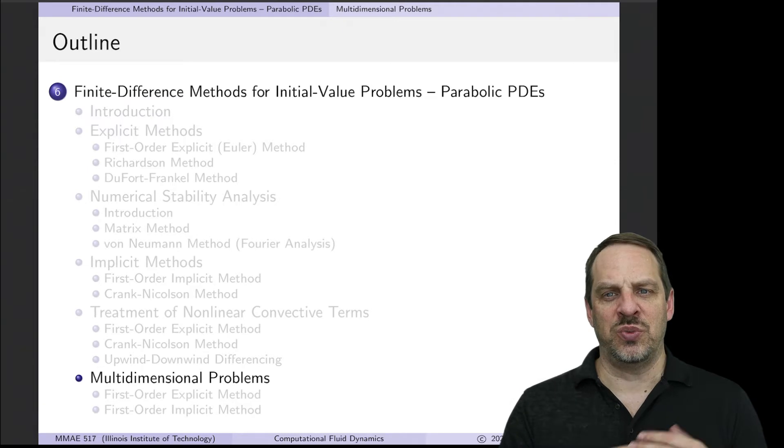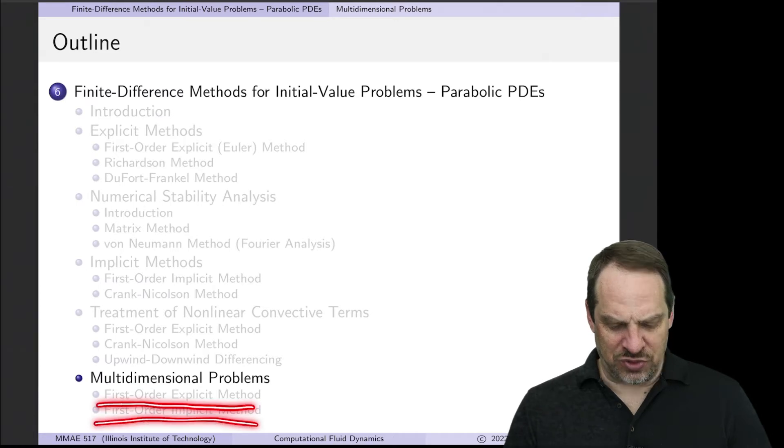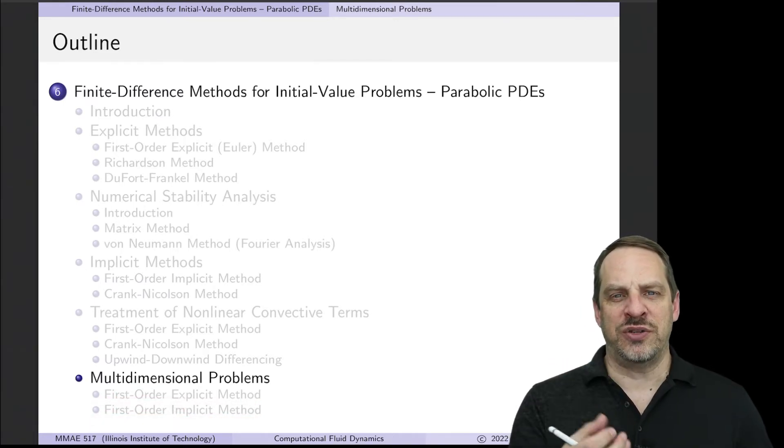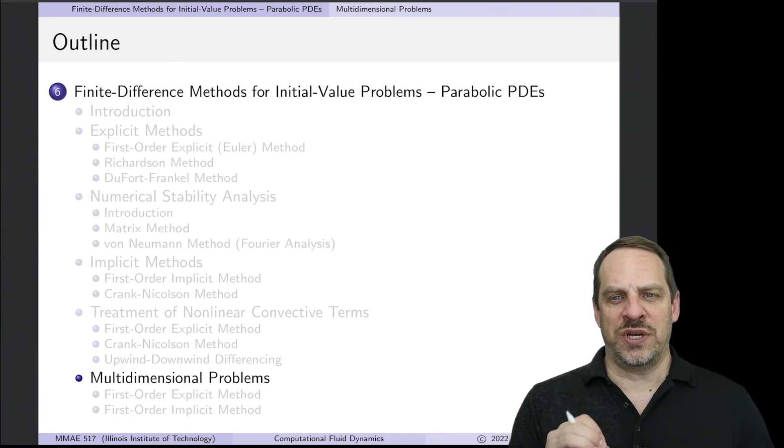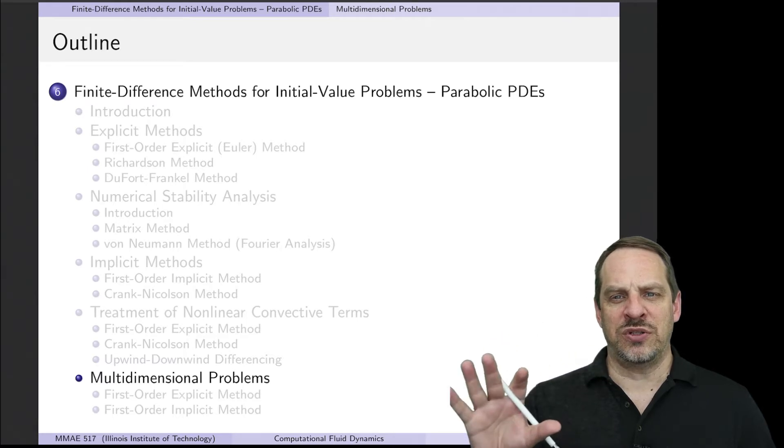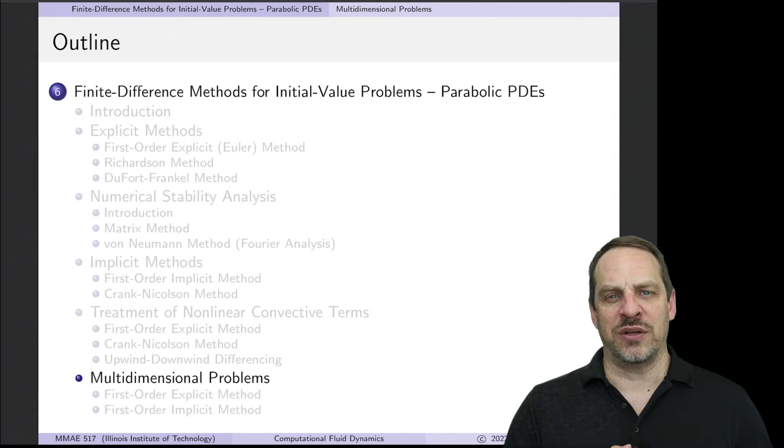We'll look specifically at two dimensions, and we'll talk about how to extend these to three dimensions as well. In this video I'm going to look at the first-order explicit method and the first-order implicit method and how they would be applied to multidimensional problems evolving in time. And then in the next video we'll look at ADI, or alternating direction implicit type methods, which we had talked about first for elliptic equations, and now we're going to adapt for these parabolic equations.